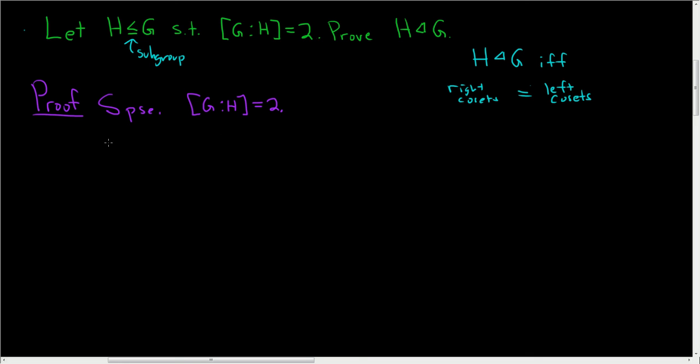This means that G has two right cosets. So then the right cosets are, well, one of them is H. That's one of the cosets. You can also think of H as HE. So that's one of the cosets.